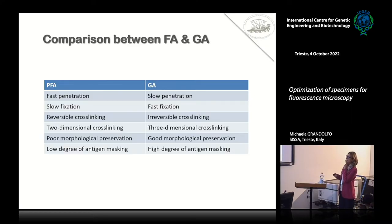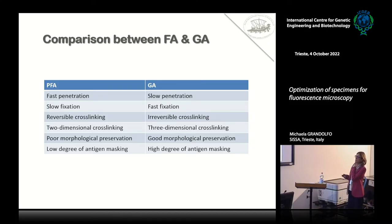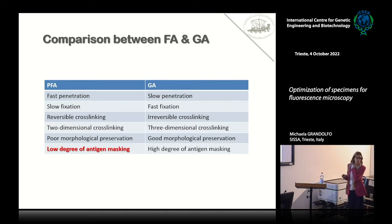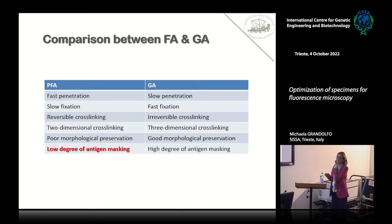We also have two-dimensional cross-linking versus a three-dimensional one. This is the reason why glutaraldehyde is the first choice for electron microscopy. For immunostaining, paraformaldehyde has a low degree of antigen masking, and this is really, really critical when you want to use an antibody to see your antigen of interest.